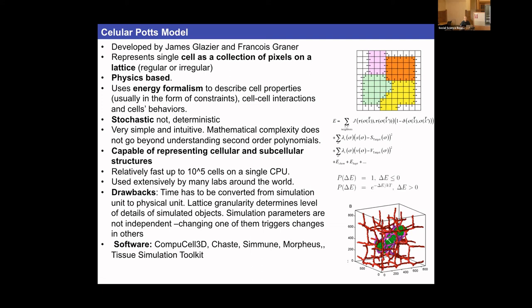In some situations a point approximation is good, but in other contexts the ability to represent cell shape is essential. If you don't get it right you'll be forcing behaviors on cells that would otherwise emerge naturally in frameworks that represent cell shapes — such as the Cellular Potts Model, the subcellular element model, dissipative particle dynamics, or vertex models.